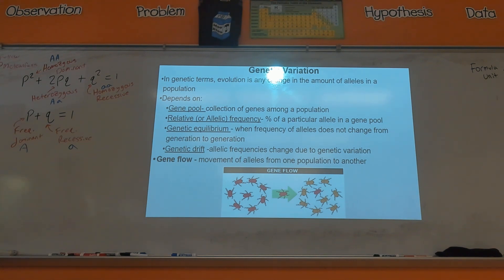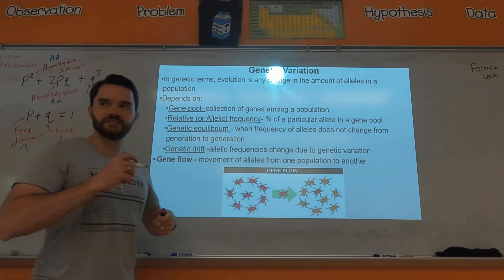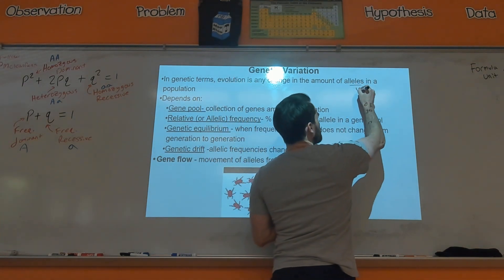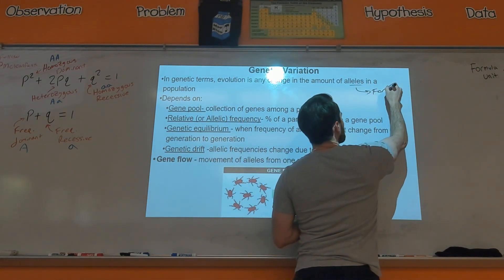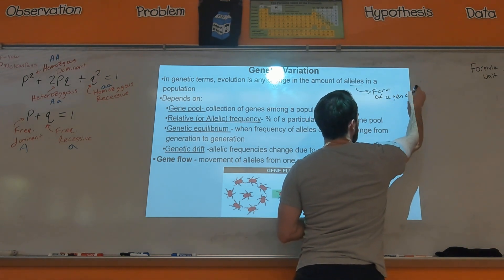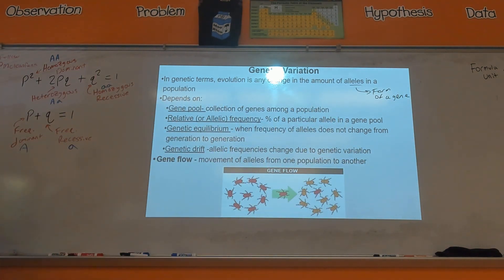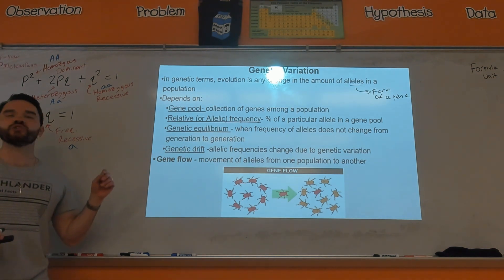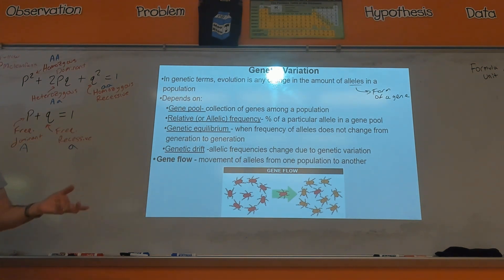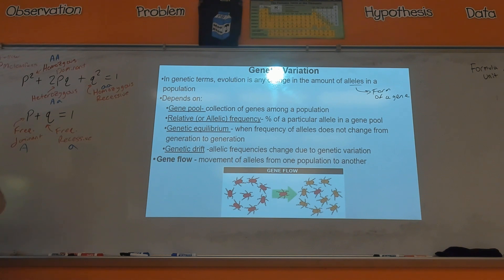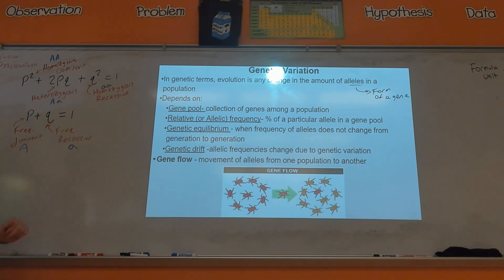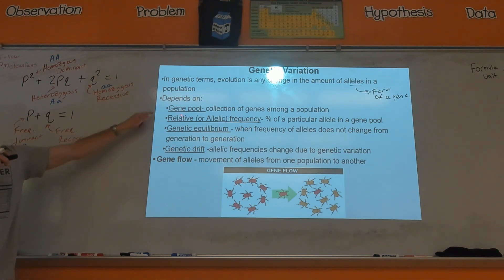What's an allele — do you remember? An allele is a form of a gene. If a gene is ice cream, an allele is a flavor of ice cream. If the gene codes for hair color, an allele will be a certain color of hair. So in other words, evolution is about the change in the percentages of different alleles in a population over time, and it depends on a few different factors.